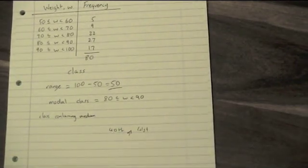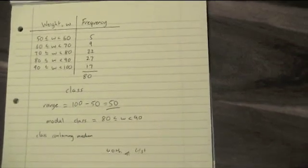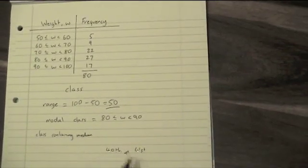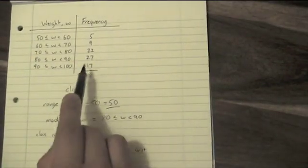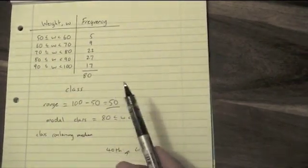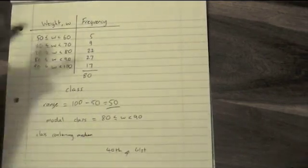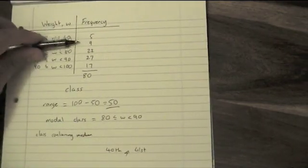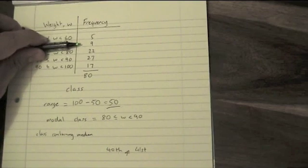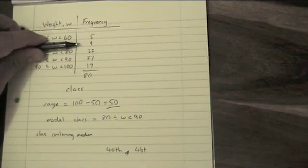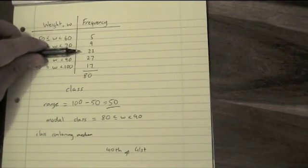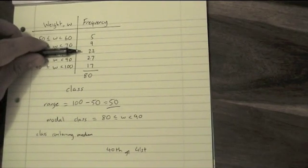But just like with normal frequency tables, you are going to find that those two numbers are both in the same row, they're in the same class. We just need to find out which one that is. The first five are in the top one, all the way up to the 14th is in the second one, all the way up to the 36th is in the next one.